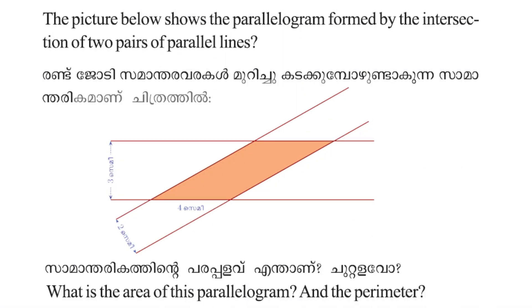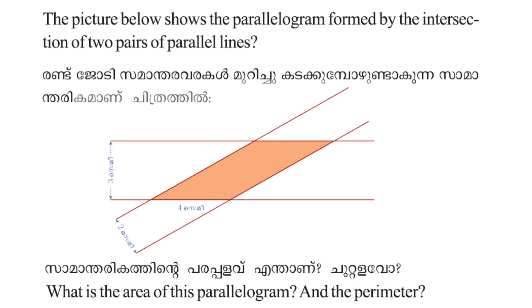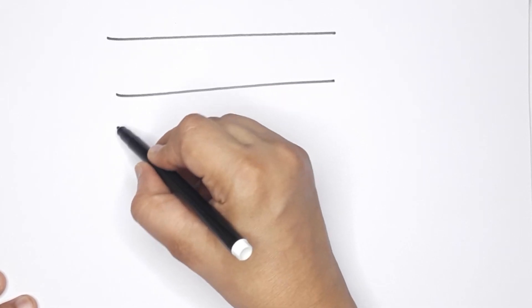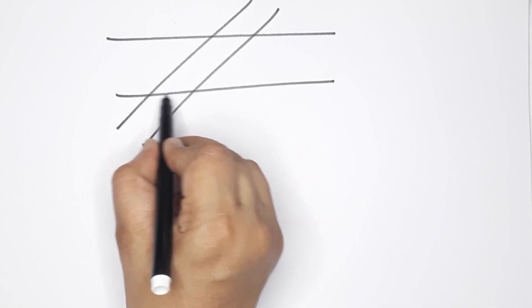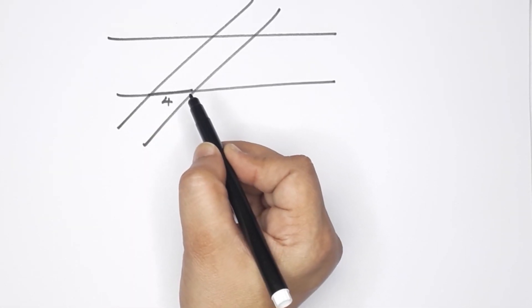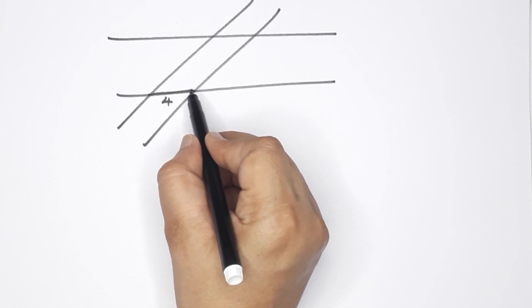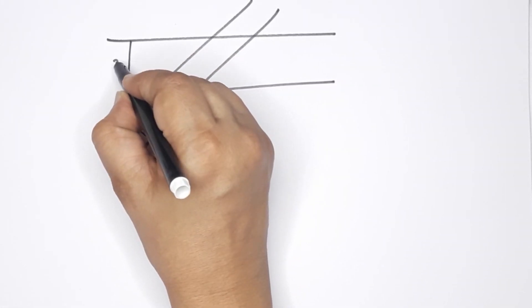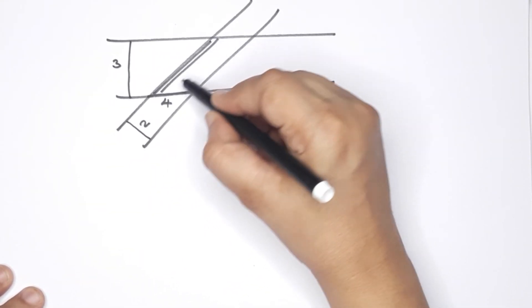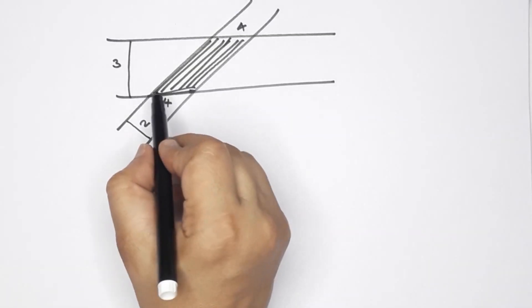Next question: The picture below shows a parallelogram formed by the intersection of two pairs of parallel lines. What is the area of this parallelogram and the perimeter? Here are two pairs of parallel lines forming four sides. This parallel line is the base, and this is the height.